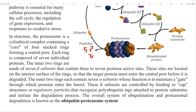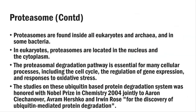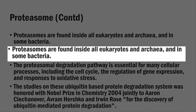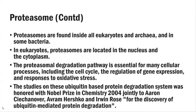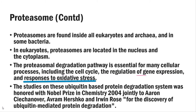The overall system of ubiquitination and proteasomal degradation is known as the ubiquitin proteasome system. Proteasomes are found inside all eukaryotes, archaea, and bacteria. In eukaryotes, proteasomes are particularly located in the nucleus and in the cytoplasm. The proteasomal degradation pathway is essential for many cellular processes including the cell cycle, the regulation of gene expression, and responses to oxidative stress.